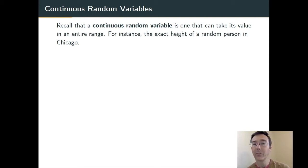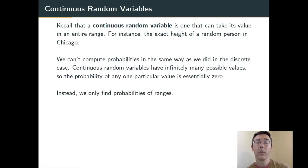For instance, if we select somebody at random and then measure their exact height. One problem here is that there are infinitely many possible values for a random variable like this, and so the probability of getting any particular value is going to be infinitesimal, approximately zero. So it doesn't really do us any good to talk about probabilities of particular values.